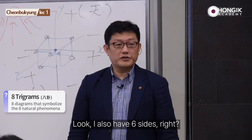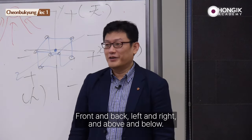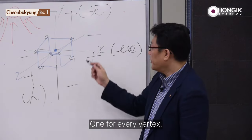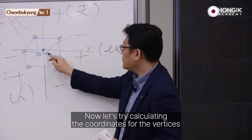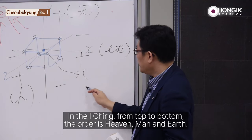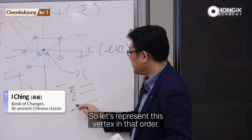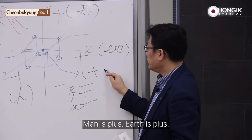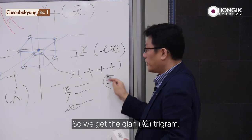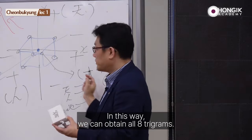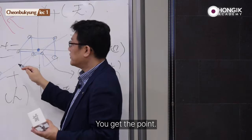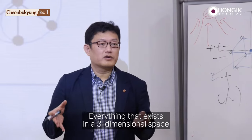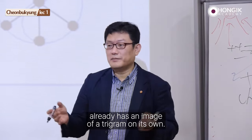I also have six sides, since I am three-dimensional, of course: front and back, left and right, and above and below. The eight trigrams are already encapsulated in anything that is three-dimensional — one for every vertex. Now let's try calculating the coordinates for the vertices. In the I Ching, from top to bottom, the order is heaven, man, and earth. So let's represent this vertex in that order: heaven is plus, man is plus, earth is plus — so we get the Qian trigram. In this way, we can obtain all eight trigrams. This side would be plus, plus, minus. So all things already naturally have an image of a trigram contained within them. Everything that exists in a three-dimensional space already has an image of a trigram on its own.